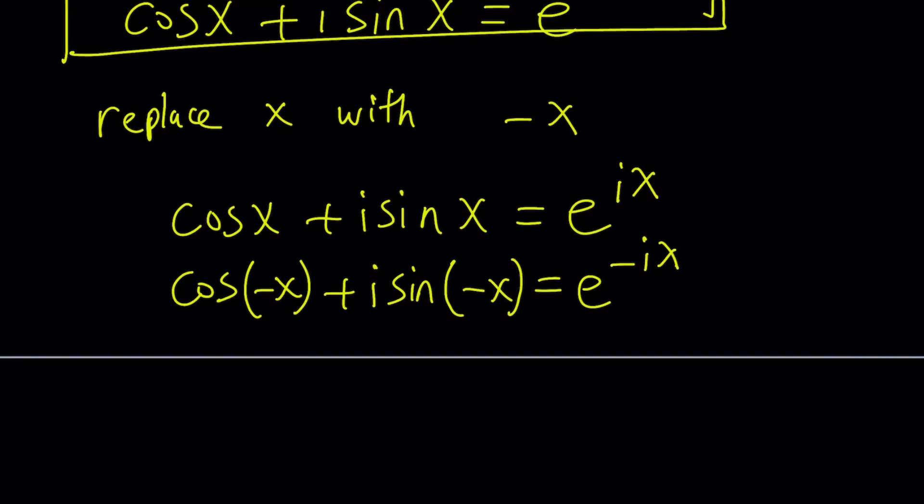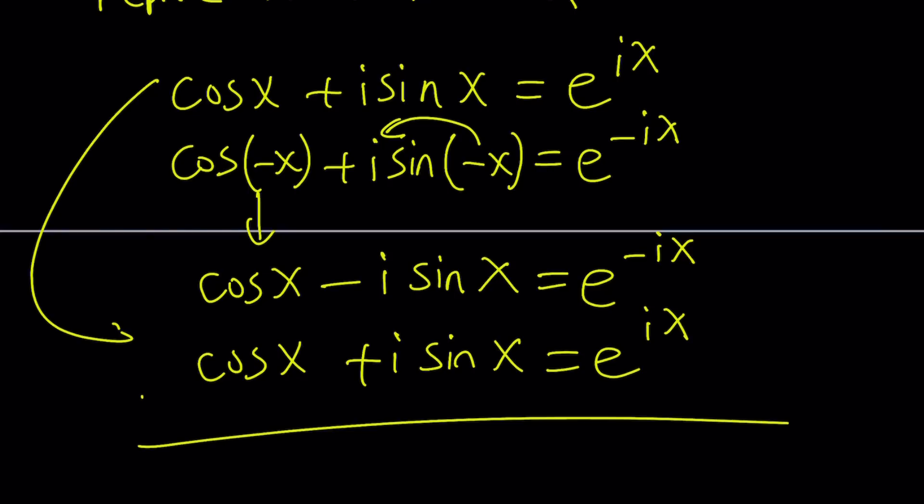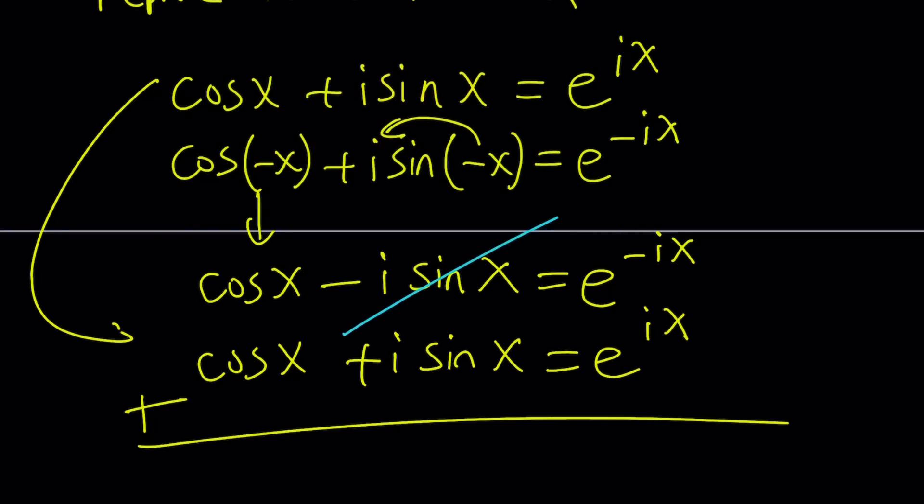Now notice that cosine is an even function. So this is going to become cosine x. But sine is an odd function. So it's going to throw away the negative and it's going to become minus i sine x with the e to the power negative ix. And then we can go ahead and bring this here. Cosine x plus i sine x equals e to the power ix. Let's go ahead and add these together. And when we add these two equations, we're going to get rid of sine x.